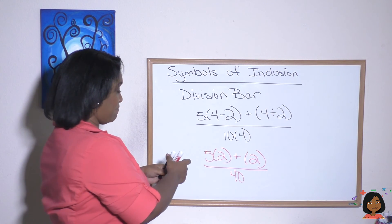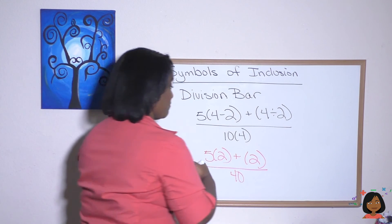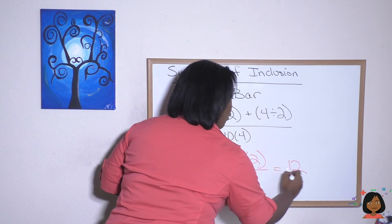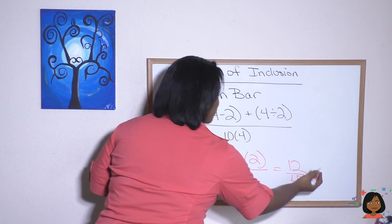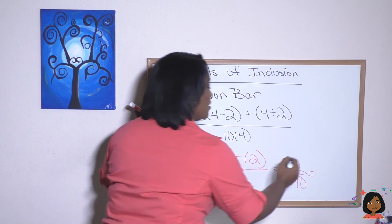We're still not done with the top, so let's do it. 5 times 2, because multiplication comes first, so 5 times 2 is 10, plus 2 is 12 over 40. That can be simplified down to 3/10.